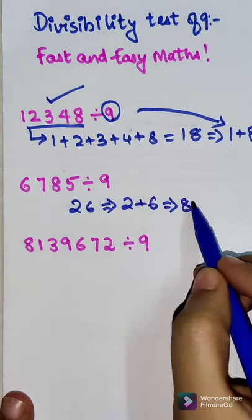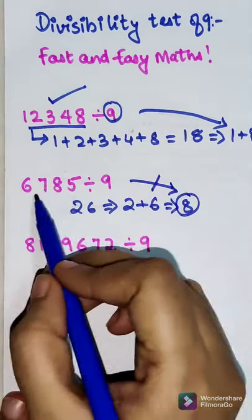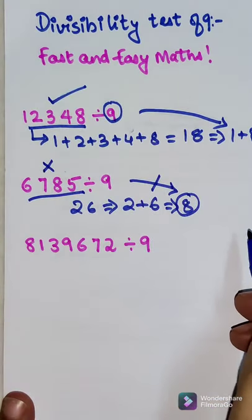That comes out to be 8. So this is not 9, so now we can say that this number is not completely divisible by 9.